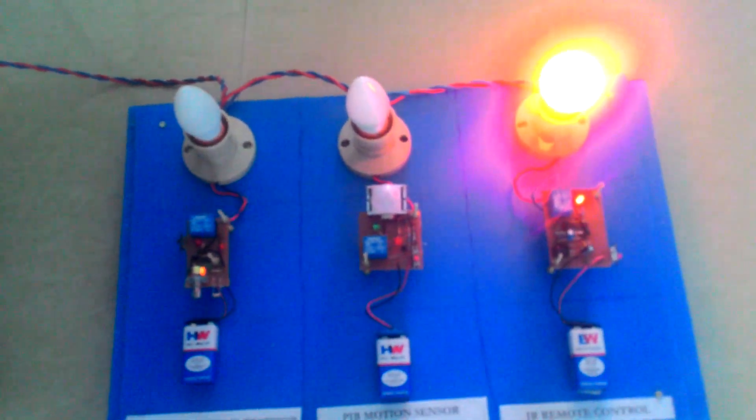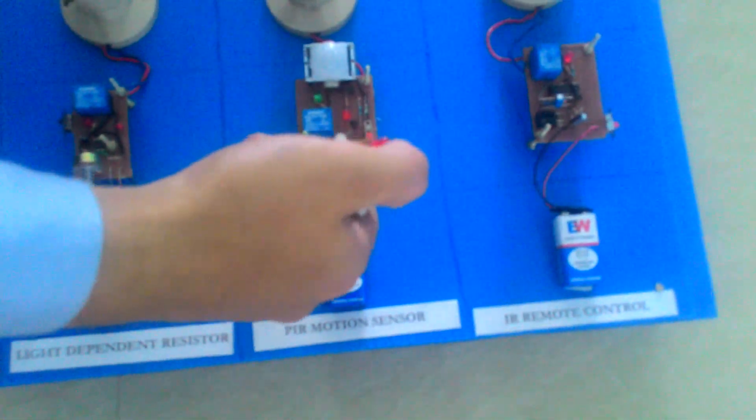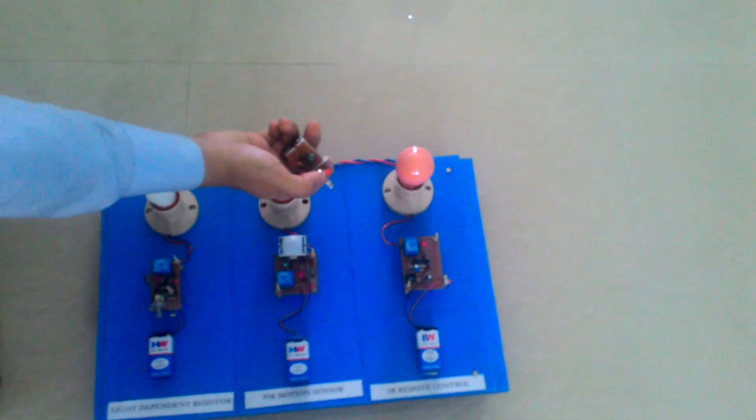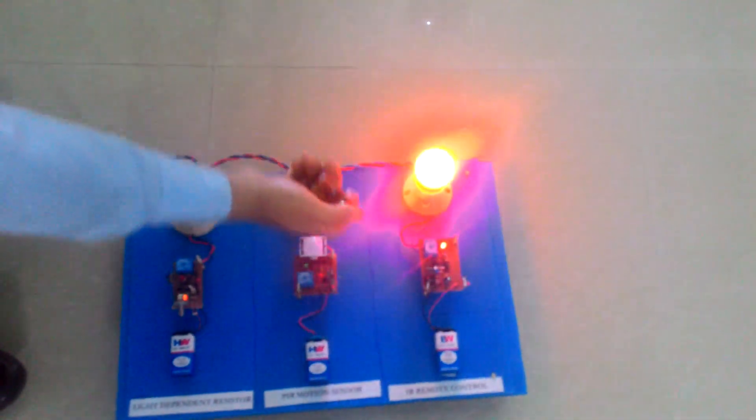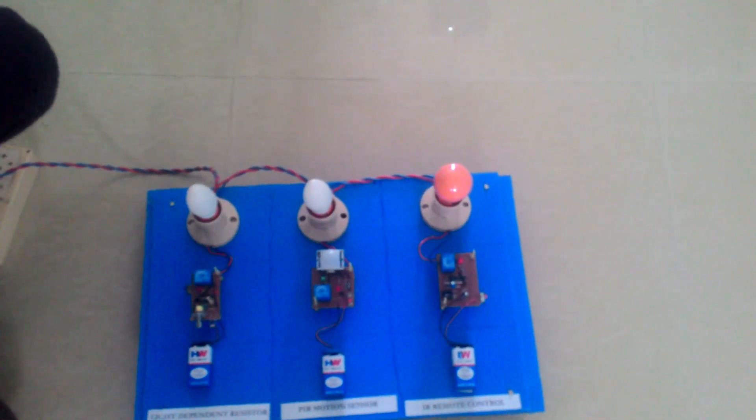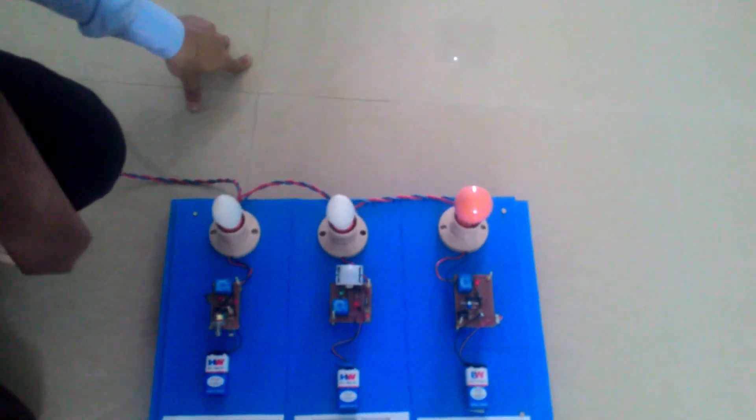The third one is the remote control. Here is the remote. It will control the light according to the switching of the remote. And that's all about the projects that we made. Thank you for listening. Have a good day.